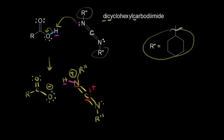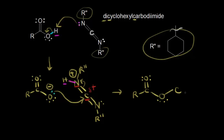Our carboxylate anion is going to function as a nucleophile in the next step. The nucleophile attacks our electrophile, pushing these electrons off onto the nitrogen. Now we have our carbon double bonded to one oxygen, and the other oxygen has formed a bond to this carbon. These electrons move off onto the nitrogen, giving us the carbon also double bonded to another nitrogen with the R'' group.